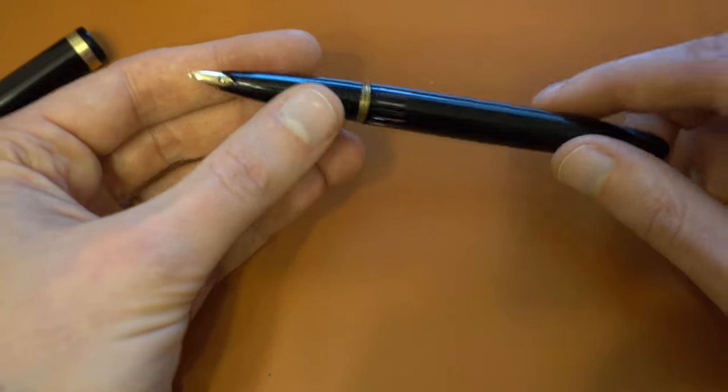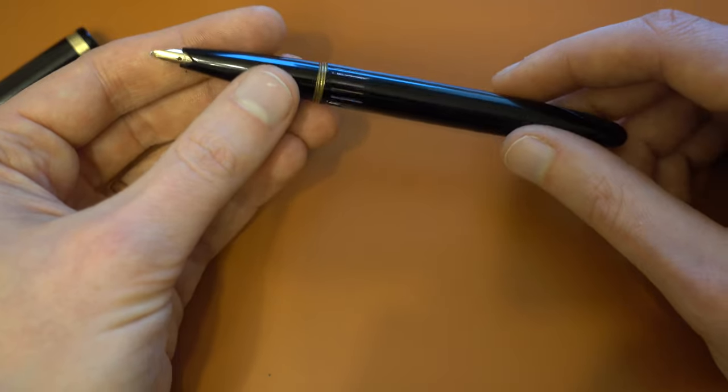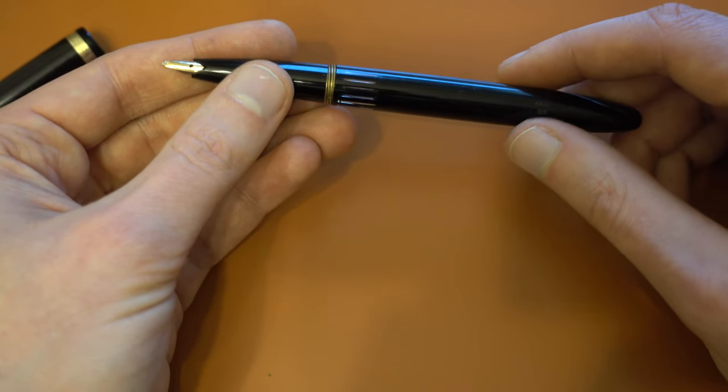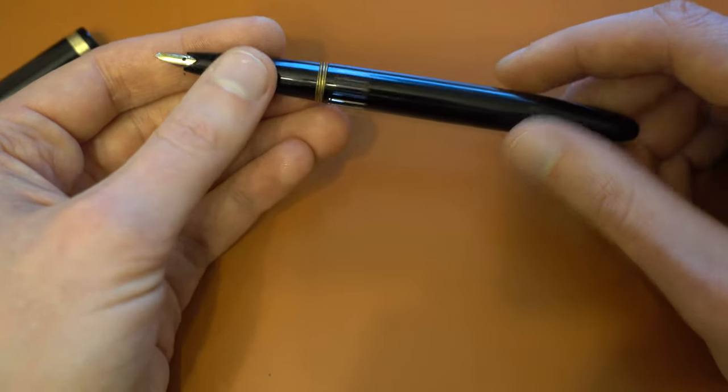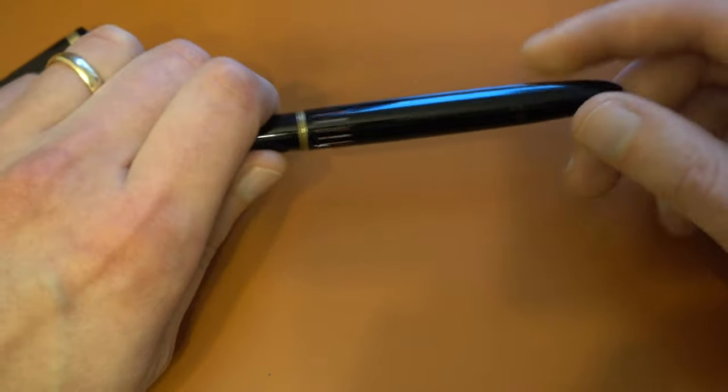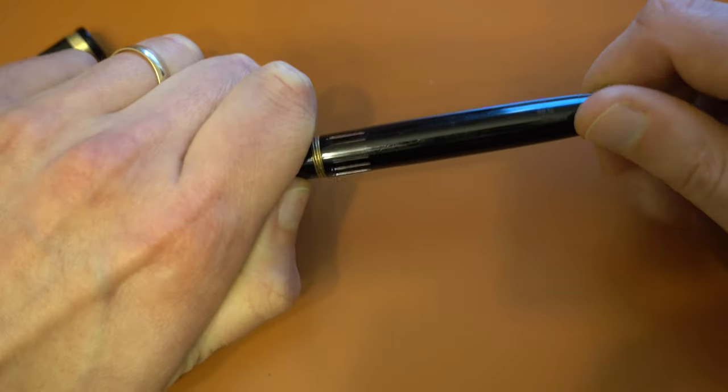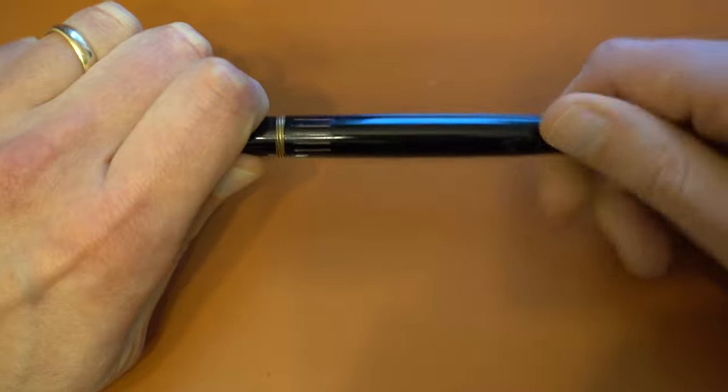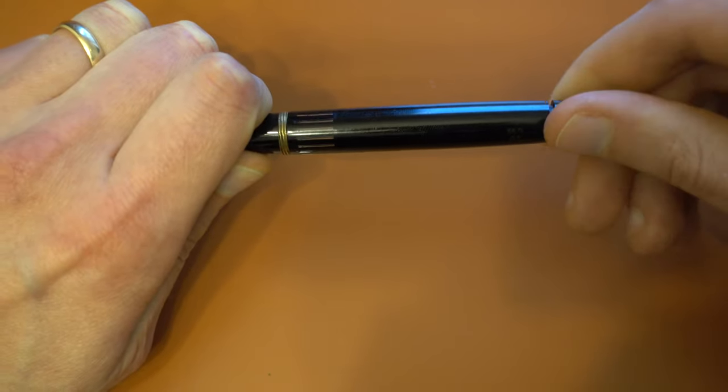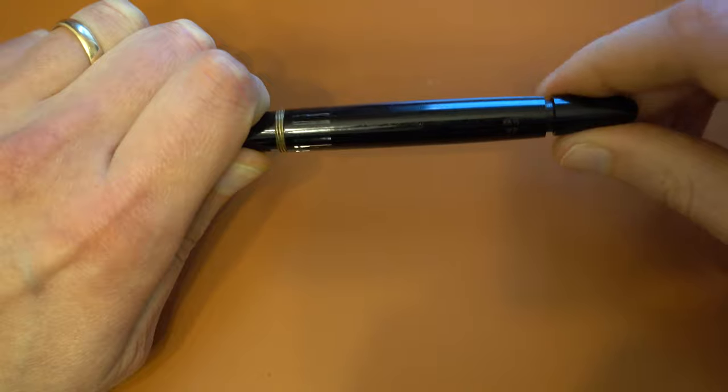And like I said, this is easy to disassemble. So really when I got this all I had to do was to soak this pen for a while. So I could take off the section and lubricate the piston. The piston action is very smooth. Works very well for a pen of this age.